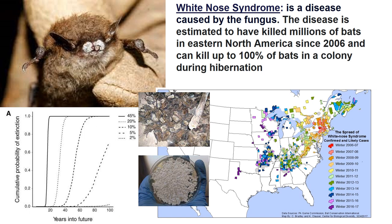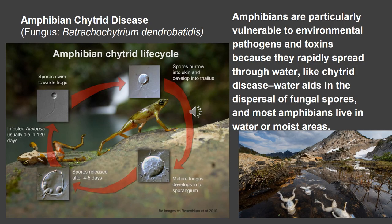White nose syndrome is a disease caused by a fungus that entered the bat population a couple of decades ago and has caused the death of millions of bats in eastern North America. Amphibians are also being affected by chytrid disease, a fungal disease that spreads through water where amphibians spend much of their lives. As amphibian habitat is compromised through water contamination, sedimentation, and habitat fragmentation, these already-sensitive organisms — which take in so much through their skin — are at even greater risk from this widespread disease.